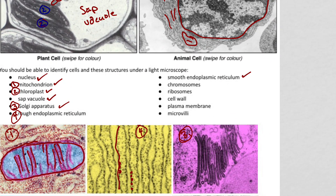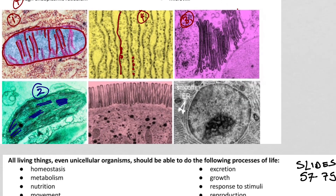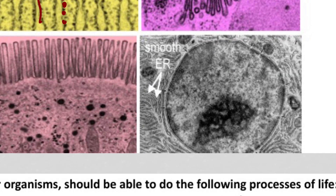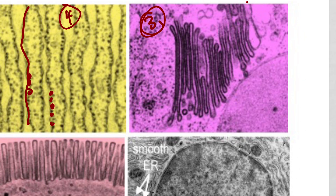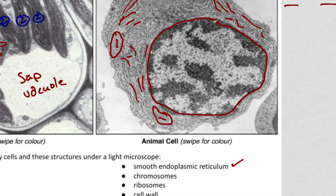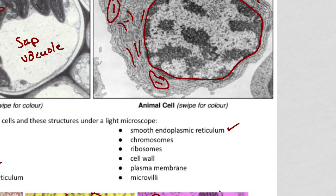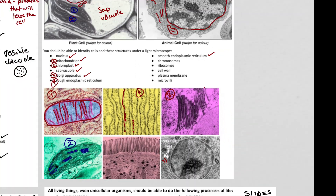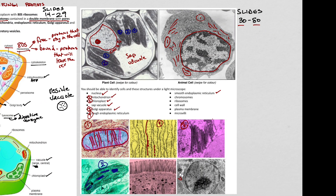The SER is a little tough to see, but it looks like RER without dots on it — though these pictures are so grainy that they always look like they have dots. Chromosomes tend to look a little bit like little bits of string attached in the middle. Ribosomes are the little dots.